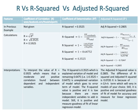By putting in all values of SS Residual and SS Total, we get an R-squared value of 0.3525. By putting in all values of MS Residual and MS Total, we get an adjusted R-squared value of 0.2805.